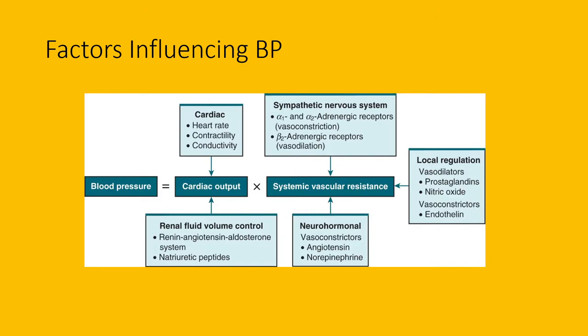Sympathetic activation affects and raises blood pressure. Another important aspect affecting vascular resistance is neurohormonal factors — including angiotensin, norepinephrine, and epinephrine. Local regulators also play a role: endothelin is a potent vasoconstrictor, while nitric oxide is a strong vasodilator.